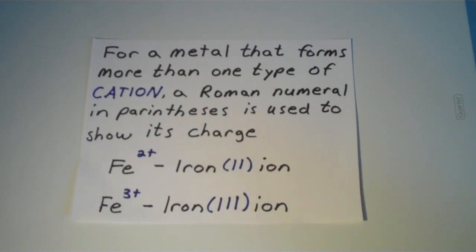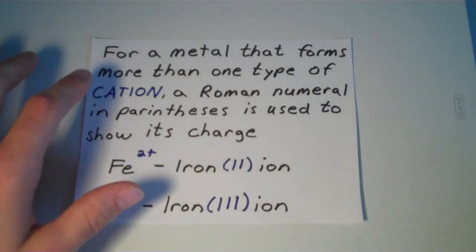So you may be asking yourselves, which metals can form more than one type of cation versus which metals can only form one type of cation. And I'm about to answer that question for you right now.